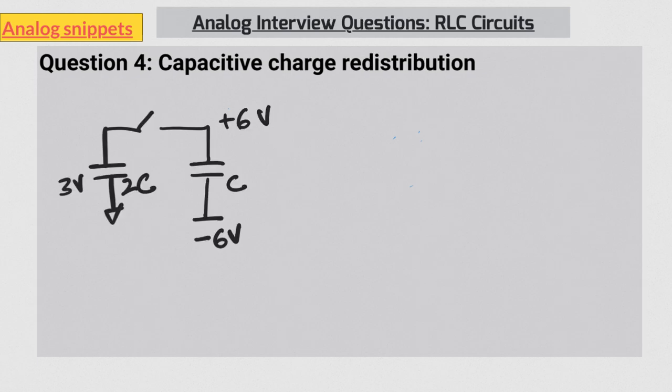Consider two capacitors with some initial charge. One capacitor is 2C charged to 3 volts and another is C charged to 6 volt but the other terminal is connected to minus 6 volts. Now if the switch is closed what is the final voltage? Okay once you have got your answer here is the next variation.